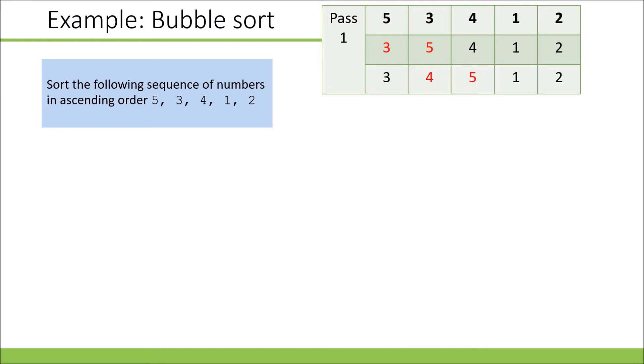Next, we compare five and four. The five is bigger, so we swap them again. Then we compare five with one, and again they're in the wrong order, so we swap them.